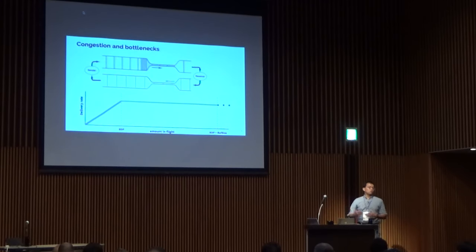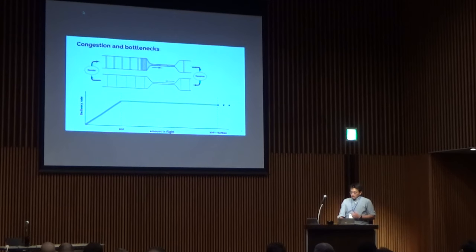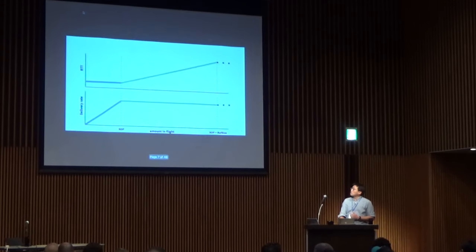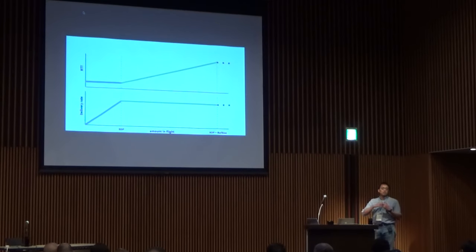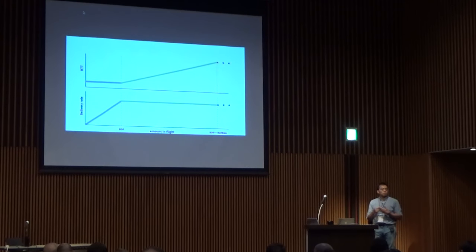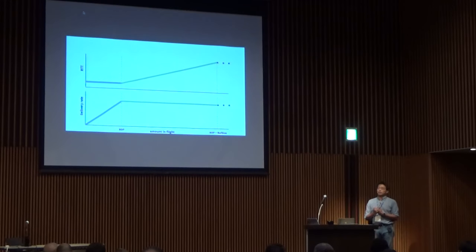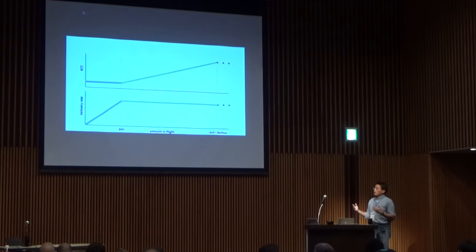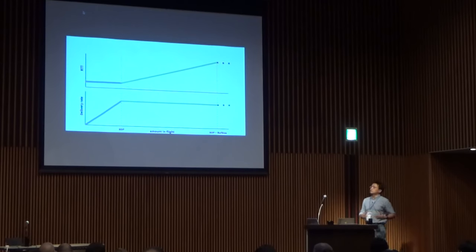Looking at a similar graph but with RTT instead of delivery rate: the RTT initially stays essentially at the two-way propagation delay. It remains constant until the bottleneck is saturated and the queue starts to build, and then the RTT just starts to shoot up. That's where we start from in building this new congestion protocol.